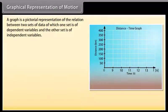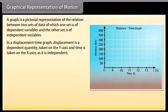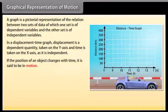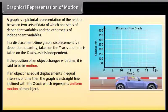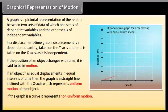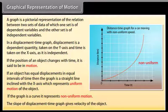A graph is a pictorial representation of the relation between two sets of data — dependent variables and independent variables. In a displacement-time graph, displacement is the dependent quantity taken on the y-axis and time is taken on the x-axis. If the position of an object changes with time, it is said to be in motion. If an object has equal displacements in equal intervals of time, the graph is a straight line inclined with the x-axis, representing uniform motion. If the graph is a curve, it represents non-uniform motion. The slope of the displacement-time graph gives the velocity of the object.